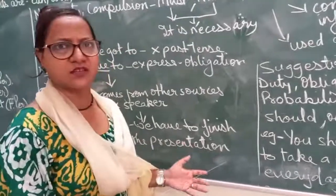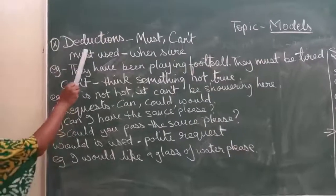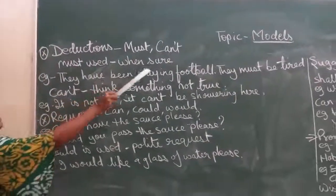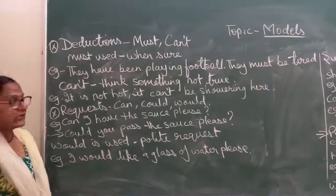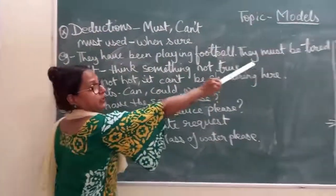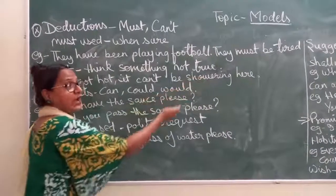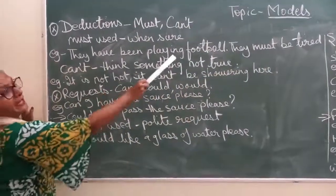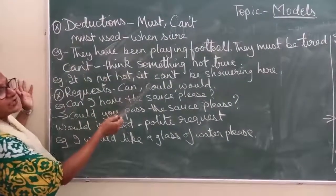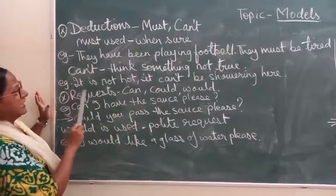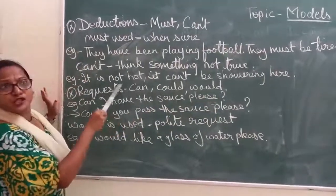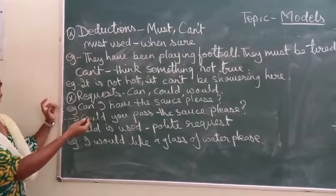Must and can't can be used for deduction. Must is used when you are sure of what action is done — like 'They have been playing football, they must be tired.' Here you are sure they are tired because they were playing football. Can't is used when you think something is not true — for example, 'It is not hot, it can't be raining here' — meaning there is no certainty it is going to rain.